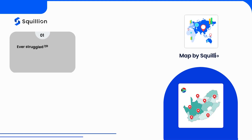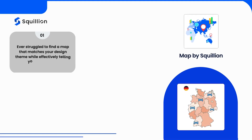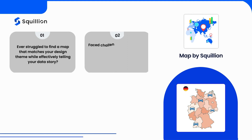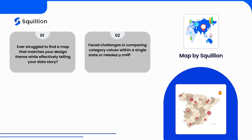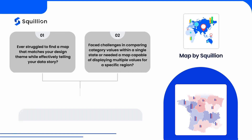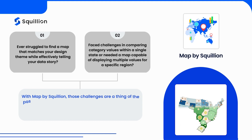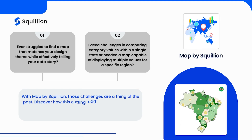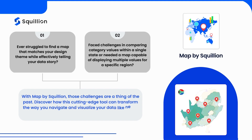Ever struggled to find a map that matches your design theme while effectively telling your data story? Faced challenges in comparing category values within a single state, or needed a map capable of displaying multiple values for a specific region? With Map by Squilion, those challenges are a thing of the past. Discover how this cutting-edge tool can transform the way you navigate and visualize your data like never before.